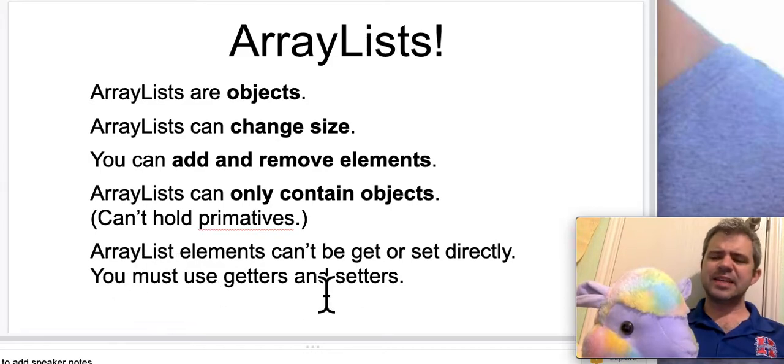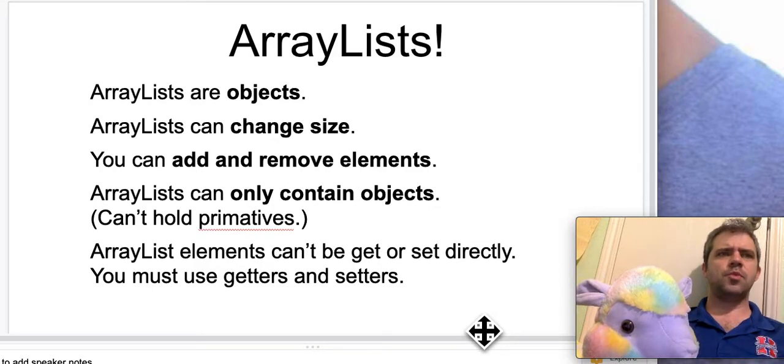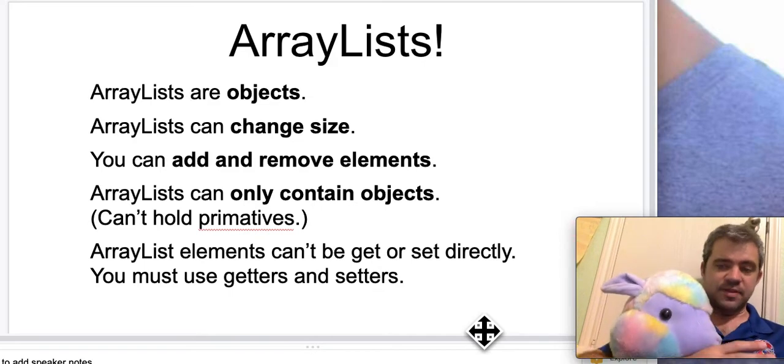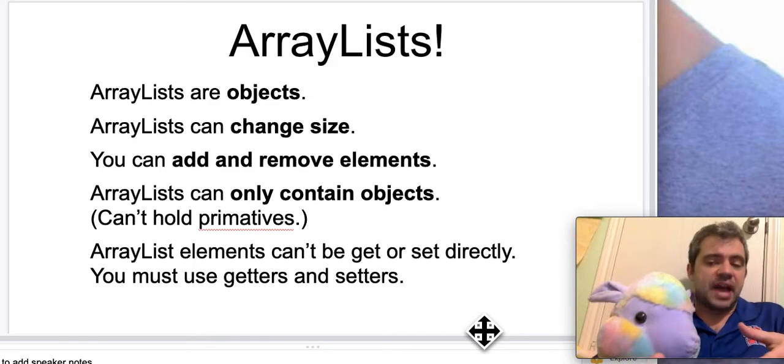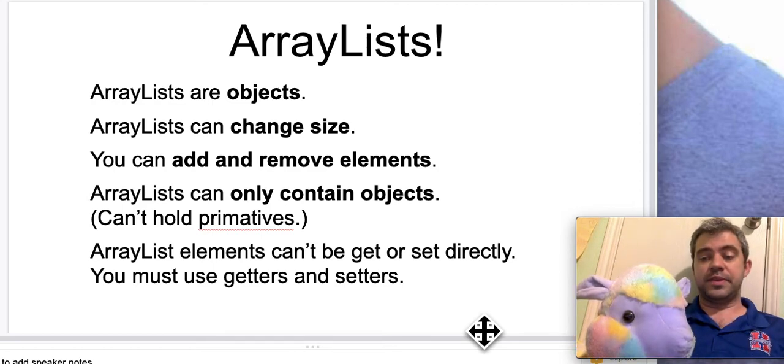This is a little annoying, but it's not so bad once you get used to it. ArrayList elements can't be get or set directly. We're going to be using getters and setters, just like we did with classes. If you had something private that you needed to get at, you just used the getter. If you needed to change the value, you used the setter. It's going to be the same thing with these lists.